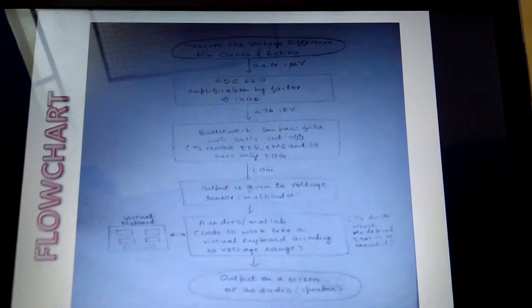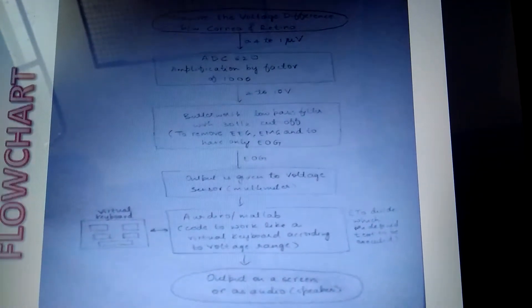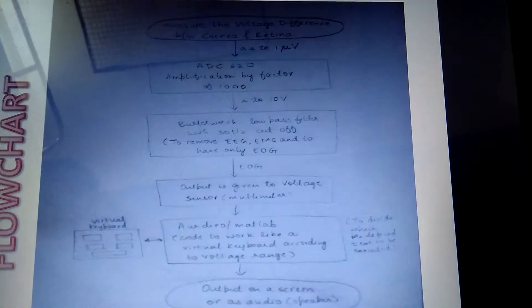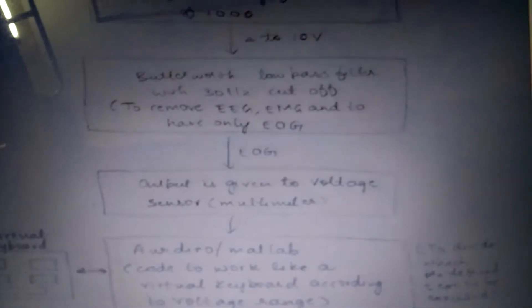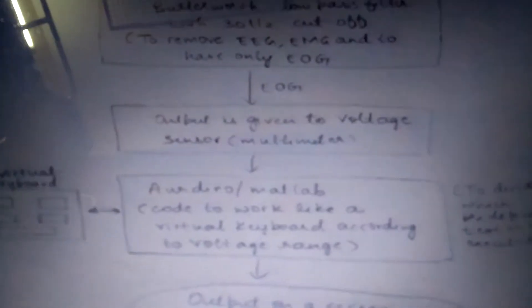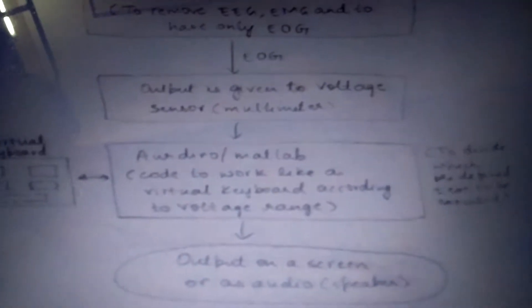This is the flowchart. Measure the voltage difference between cornea and retina, which will be 0.4 to 1 mV. Then use ADC 620 for amplification by a factor of 1000, giving 4 to 10 volts output. Apply the Butterworth low pass filter with 30 Hz cut-off to remove EEG and EMG, leaving only EOG. The EOG output is given to the voltage sensor, then to Arduino or MATLAB port to work like a virtual keyboard according to the voltage range. Output is on screen or as audio through speaker.